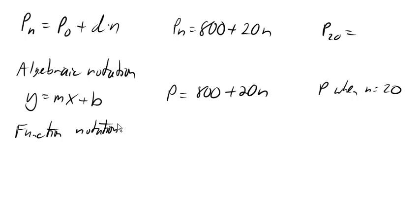And so in function notation, we might write P of N equals, in something, in this case, something like P0 plus D times N. Or, in a specific case, it might look something like this.